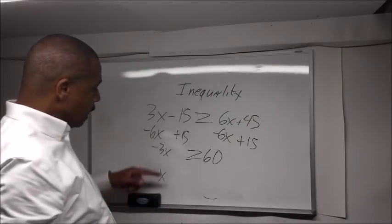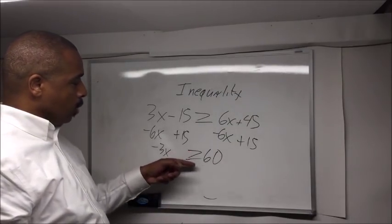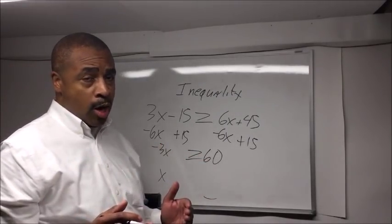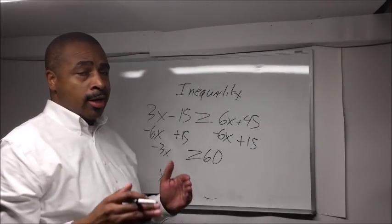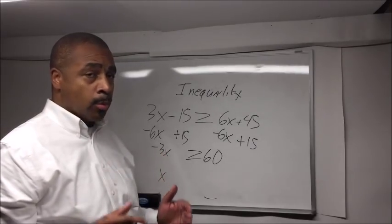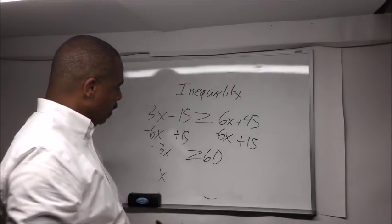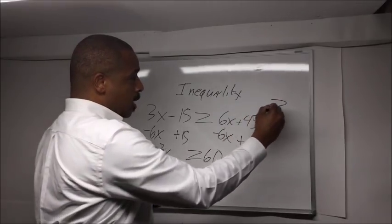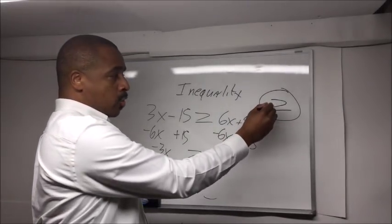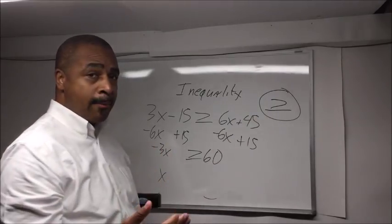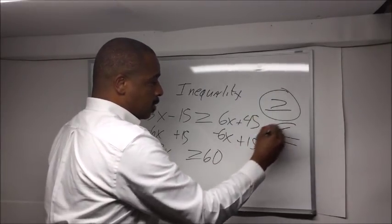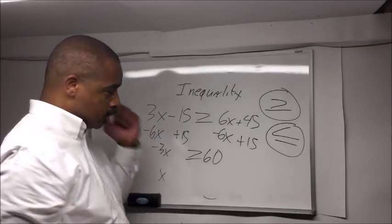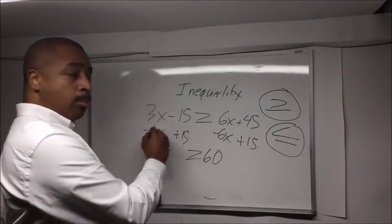Now we have minus 3x is greater than or equal to 60. There's a special rule when solving inequalities: whenever you are dividing or multiplying by a negative number, you need to change this sign. Right now this sign is greater than or equal to. When we divide by a negative, we're going to switch it to less than or equal to. That is simply a rule when you're solving inequalities.